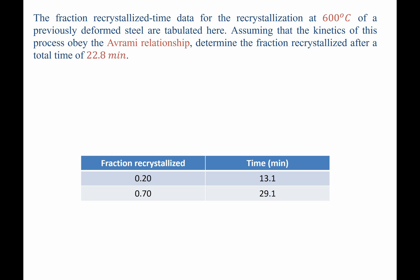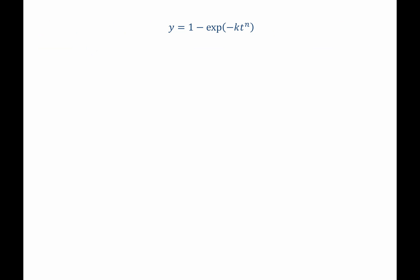Since we're talking about the Avrami kinetics, let's begin with that equation. The Avrami kinetic equation says that y, the fraction transformed or converted, is going to be equal to 1 minus the exponential of negative kt to the n. Now k and n are constants, and t is just time.